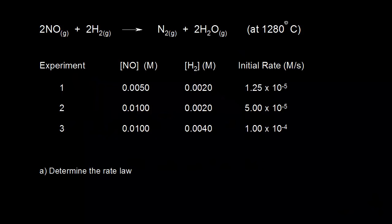Now that we understand how to write rate laws, let's apply this to a reaction. Here we have the reaction of nitric oxide, which is NO, and hydrogen to give us nitrogen and water at 1280 degrees C. In part A, our goal is to determine the rate law.